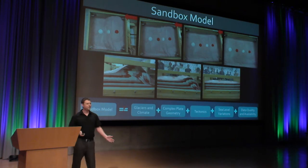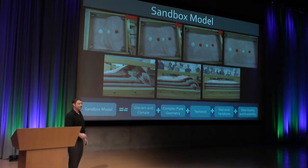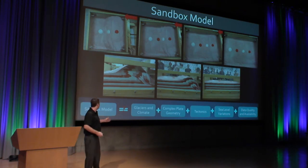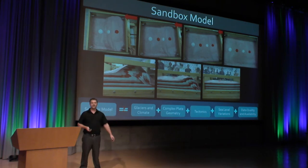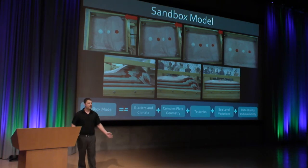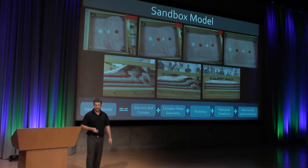In the real world, what we have is a lot more complexity. We have layers added onto this — we have glaciers and climate, sea level variations, and of course we never have perfect data.